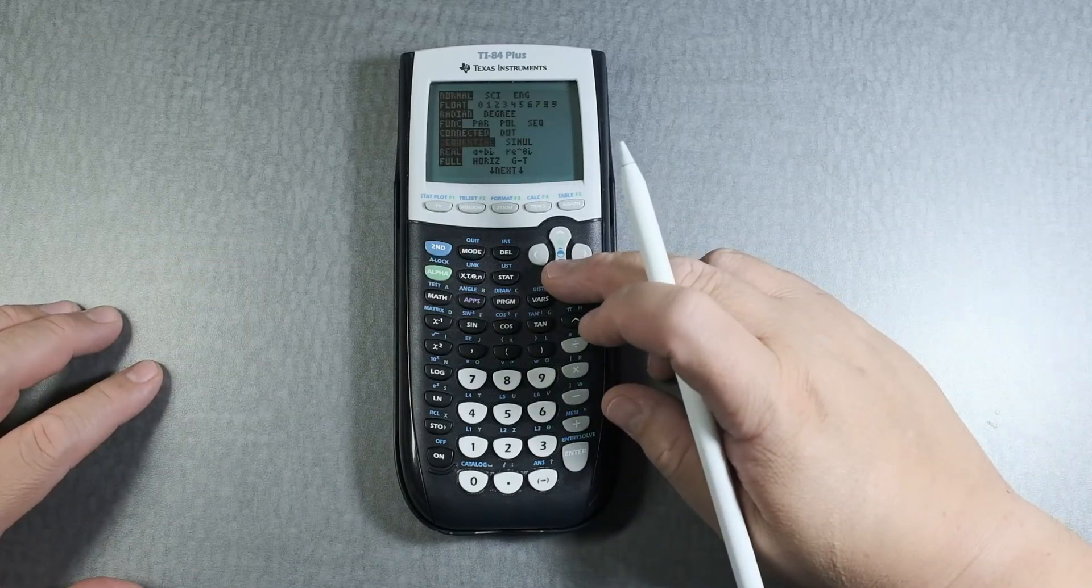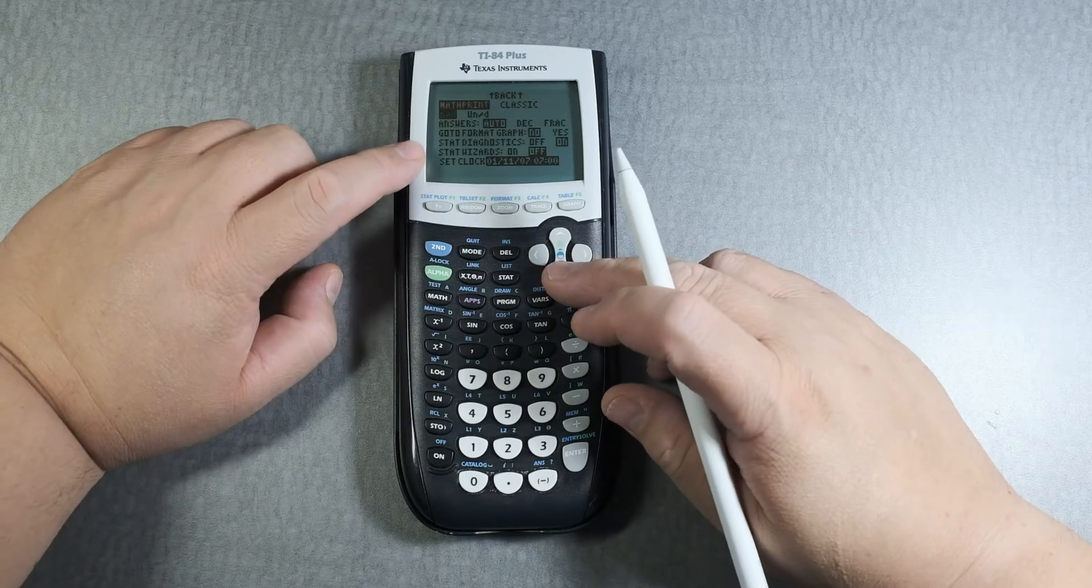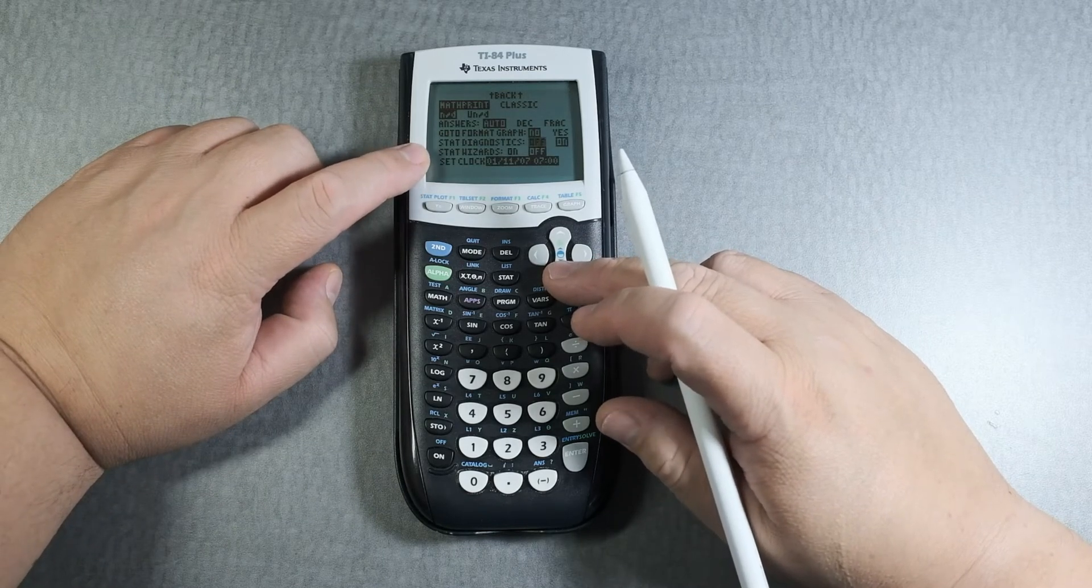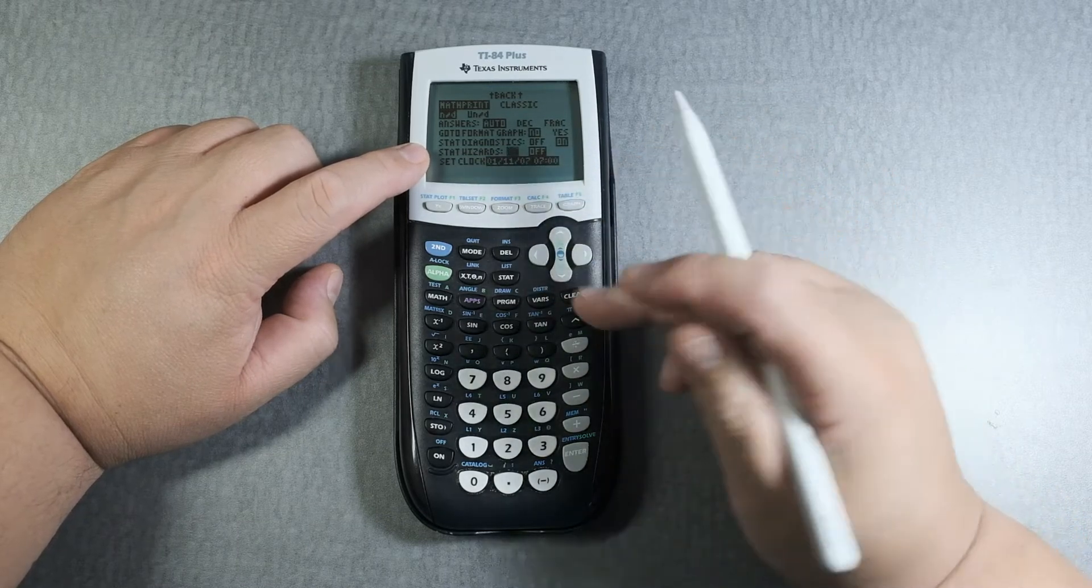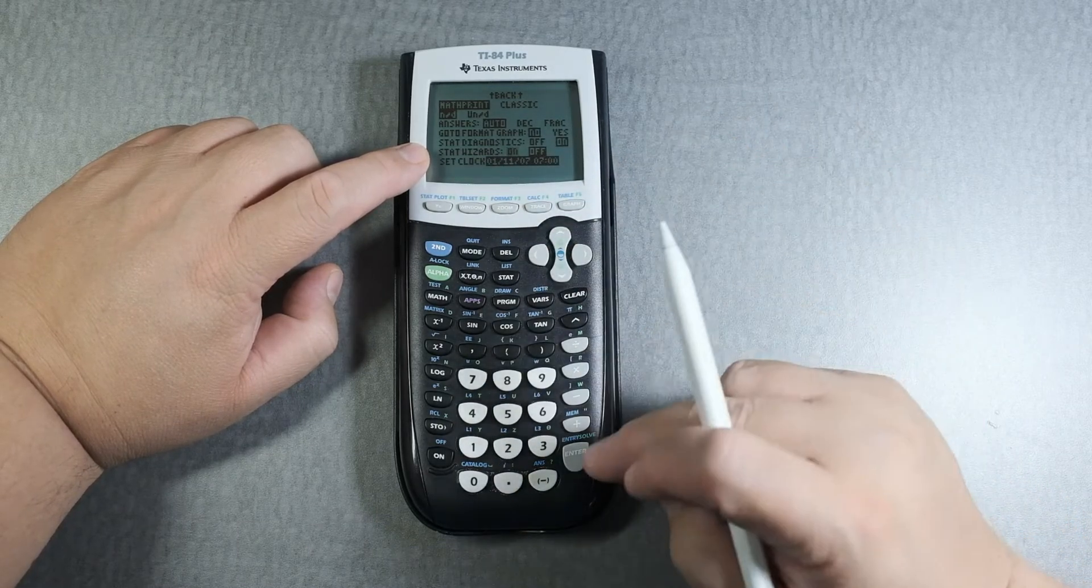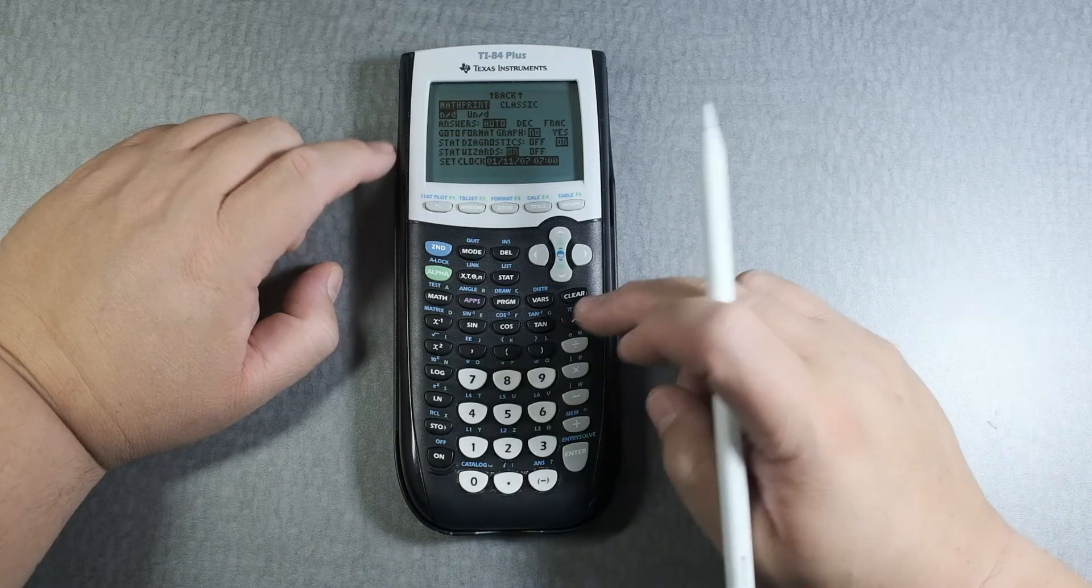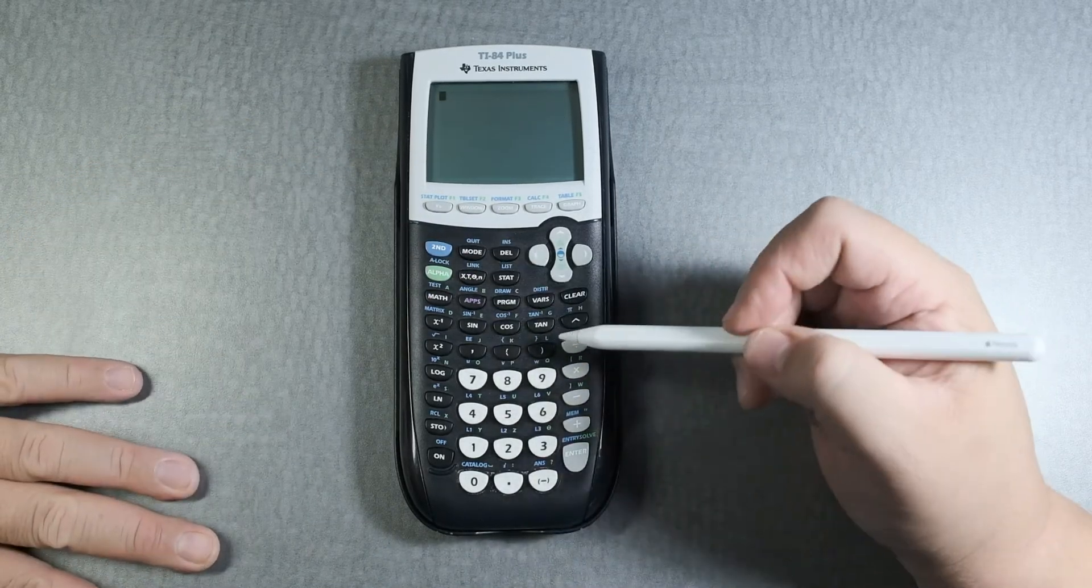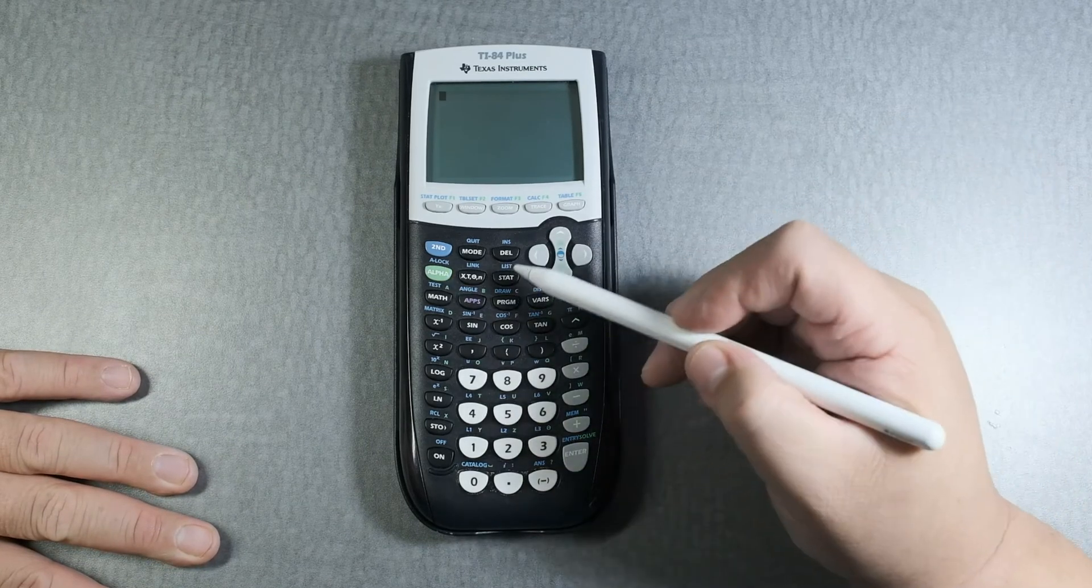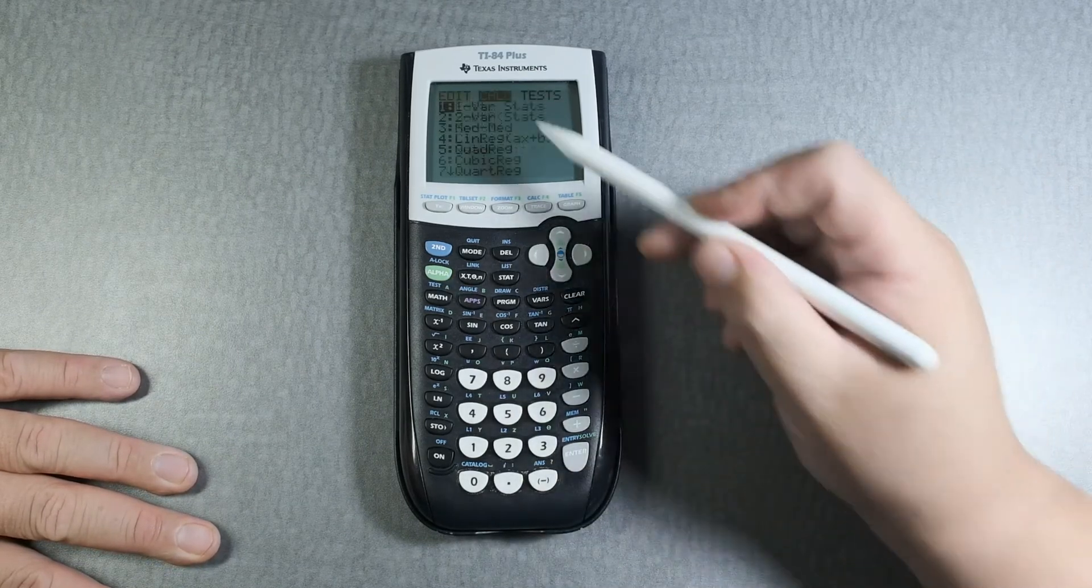A lot of times there is no second page or there is no step wizard. So here you can turn it on, enter, quit, second quit. And now when you go to stat, go over one variable, it gives you a stat wizard.